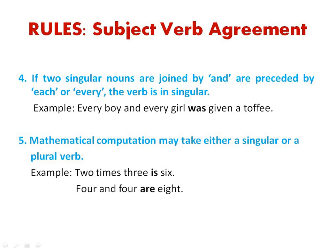For mathematical computation, the verb may take either a singular or a plural verb. This is complicated because there is no hard and fast rule. We depend on our ear. For example, we say 'two times three is six,' but 'four and four are eight.' So in mathematical computations, it can either be a singular or a plural verb, depending on the feel of the phrase.